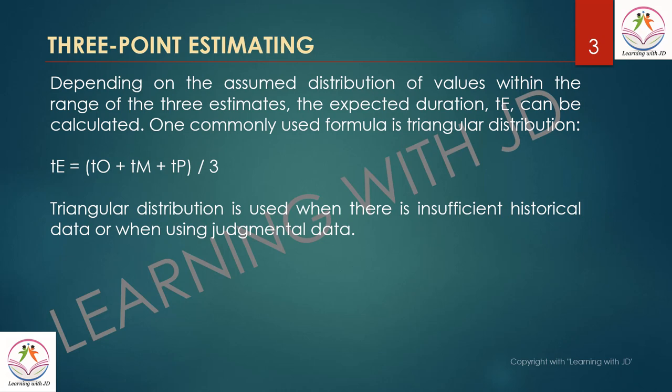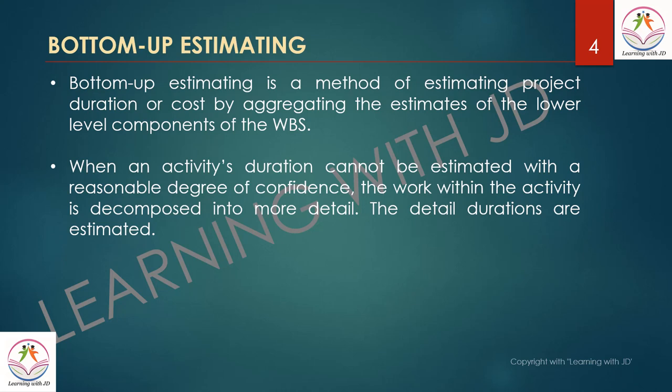The last one is bottom-up estimation. Bottom-up estimation is a method estimated as the planning of the project progresses, and it is the most accurate. You plan the project activities at the lowest level — say at the WBS (Work Breakdown Structure) level — and then you aggregate them to come up with an estimate. For each activity you will know it takes two days, three days, one day, etc., and then you add all that to come up with an approximately accurate project timeline.